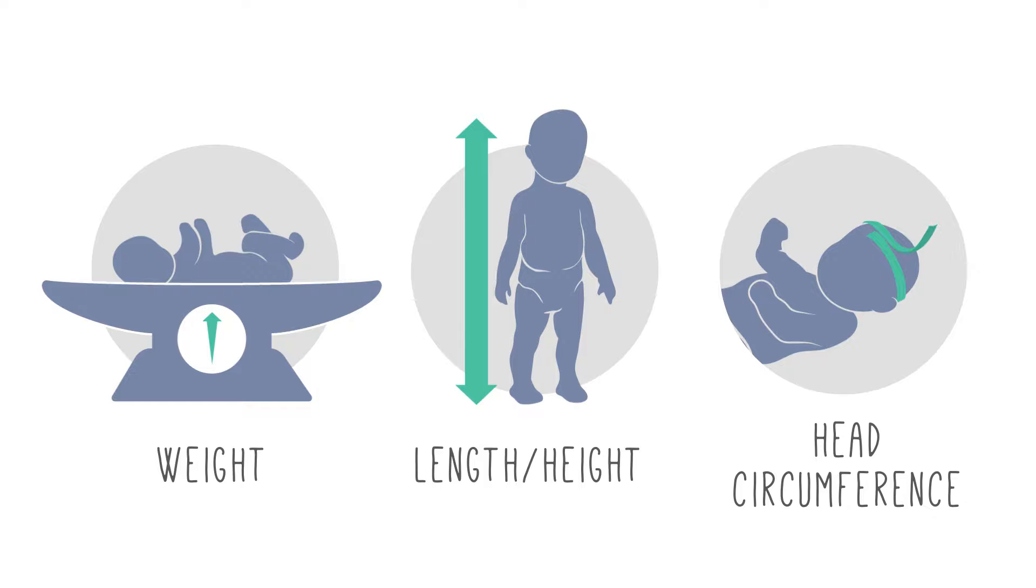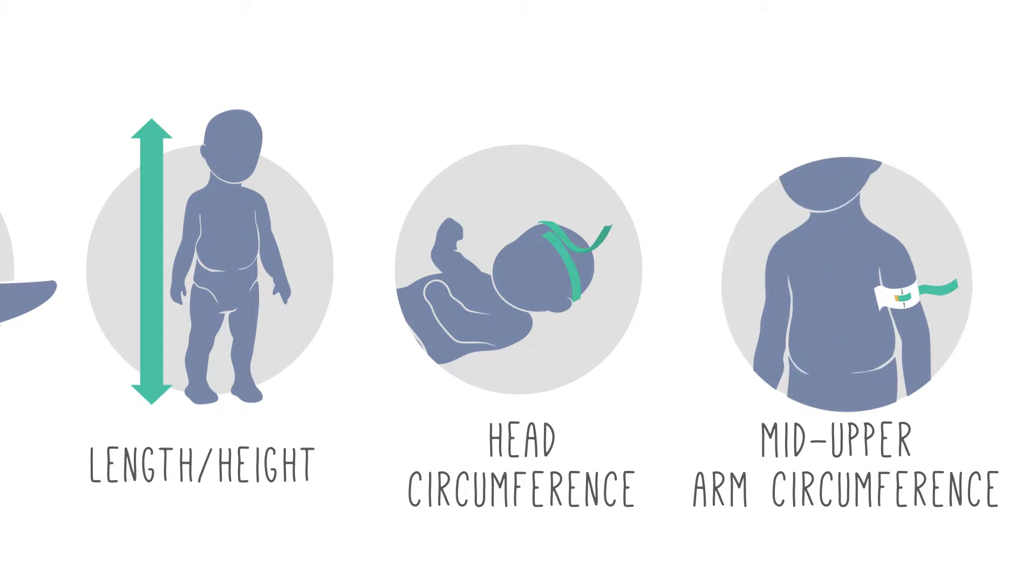In many countries, health workers will also use a measurement called mid-upper arm circumference, which is the circumference of the left upper arm halfway between the shoulder and the elbow. Mid-upper arm circumference is a useful tool for fast assessment of nutrition status.